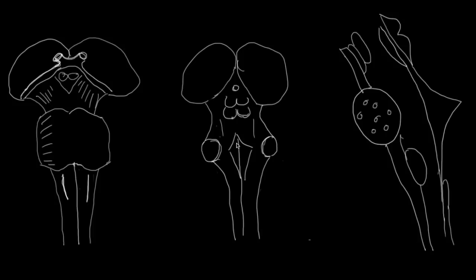The brainstem consists of three main parts, although in these diagrams the thalami, which you can see here, are not actually part of the brainstem, but they're usually included as the top of it.